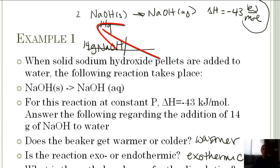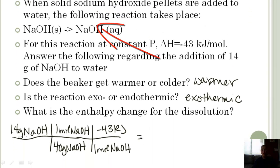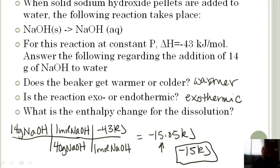If there was a 2 up here, that would change our ratio down at the bottom. If we calculate this, it should get negative 15.05 kilojoules. We want significant figures, and it looks like 2, so our answer is negative 15 kilojoules. Even though for the reaction it's negative 43, that's per mole. For 14 grams, 15 kilojoules would be given off.